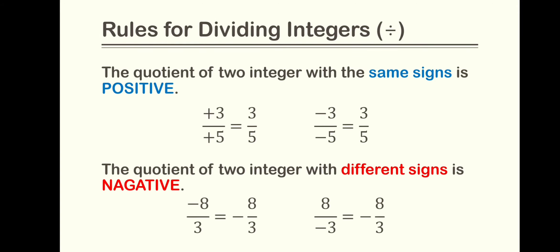Rules for dividing integer. The quotient of two integers with the same sign is positive. The quotient of two integers with different signs is negative.